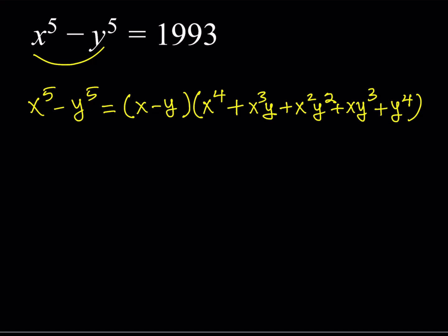Factoring makes the solution easier — we can break it down into different cases. First, notice that 1993 — this was likely a competition problem from 1993 — is a prime number. It has no other divisors than one or itself. If you have a prime number that can only be factored in a limited way, we won't have many cases. Since x to the fifth minus y to the fifth is positive, x is greater than y, so x minus y is positive, meaning the other factor is also positive.